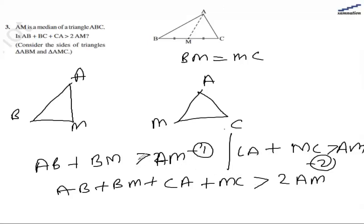As we know, BM equals MC, and both of them combined will make BC. So adding BM and MC makes BC. Therefore, AB plus BC plus CA is greater than 2AM.